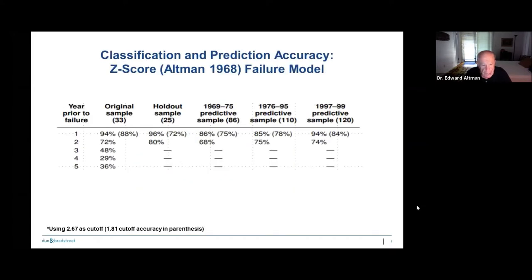The accuracy of that model in the laboratory was quite good: 94% accuracy within one year and 72% within two years. That second-year accuracy has improved quite a bit over the years. In holdout samples — observations not used to build the model — the accuracy was actually slightly better, which surprised me. Over the years, in predictive samples, the accuracies are consistently over 80% within one year of bankruptcy and between 68 and 75% two years prior. Originally we established a 1.81 cutoff score.